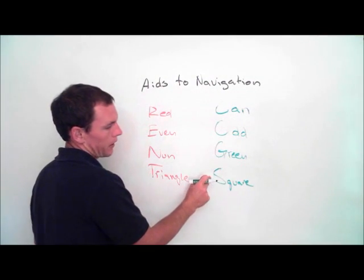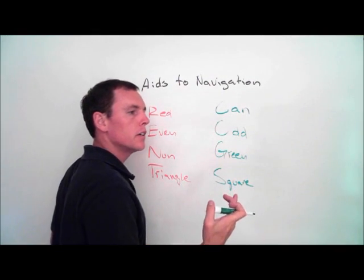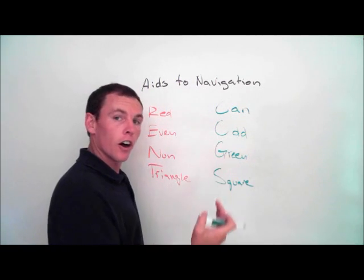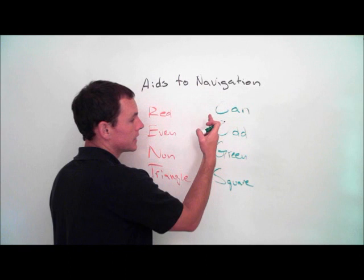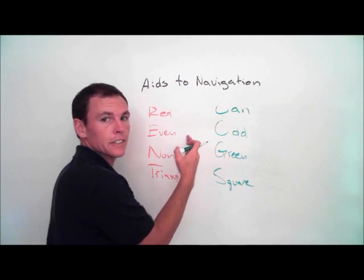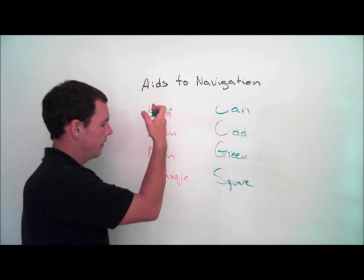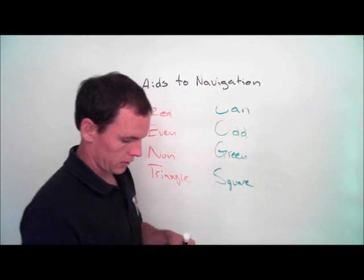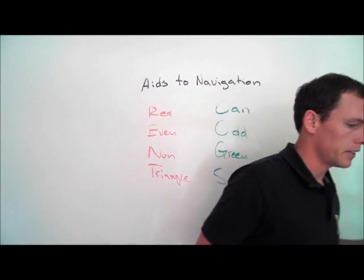Can, Odd, Green, Square — COGS. When you're entering from sea, the port hand marks: if it's an unlighted buoy, it's a can. If it's numbered, it's an odd number. Its color is green. If it's a day marker, it's a square. RENT COGS — it's just a good association to help us remember this.